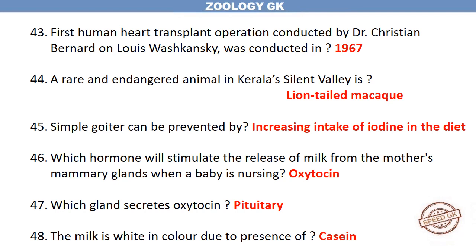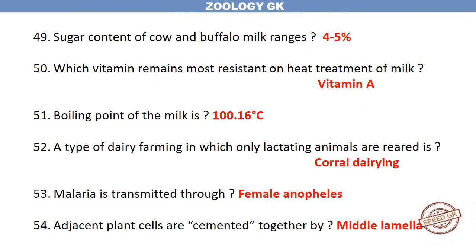The first human heart transplant operation was conducted by Dr. Christian Barnard on Louis Washkansky in 1967. A rare and endangered animal in Kerala's Silent Valley is the lion-tailed macaque. The sugar content of cow and buffalo milk ranges from 4–5%.